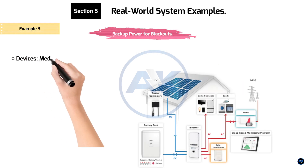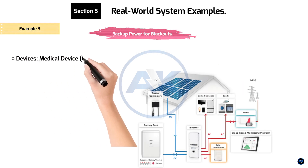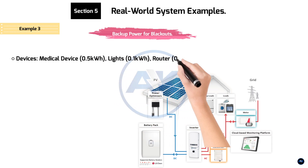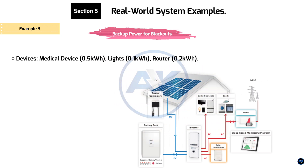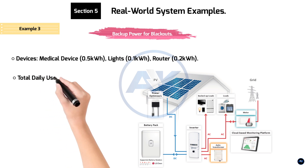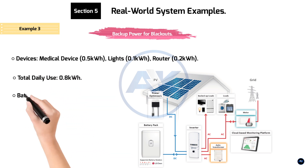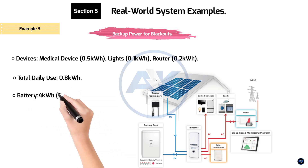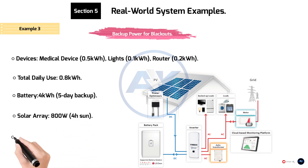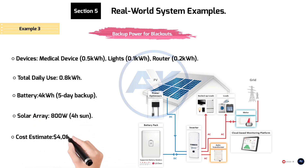Example 3: Backup power for blackouts. Devices — medical device: 0.5 kWh. Lights: 0.1 kWh. Router: 0.2 kWh. Total daily use: 0.8 kWh. Battery: 4 kWh (5-day backup). Solar array: 800 watts (4 hours sun). Cost estimate: $4,000–$6,000.